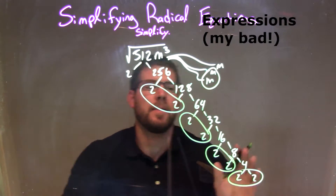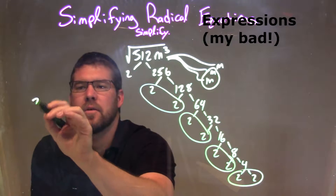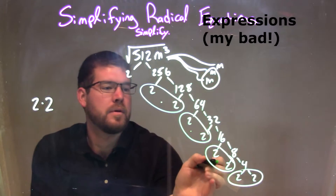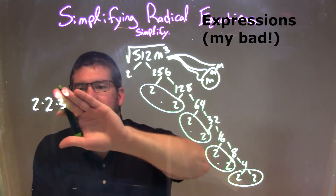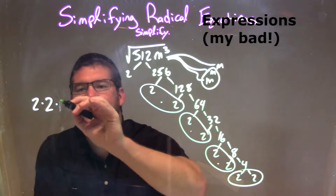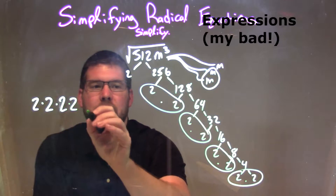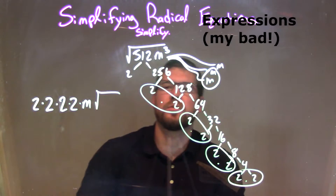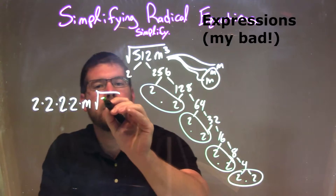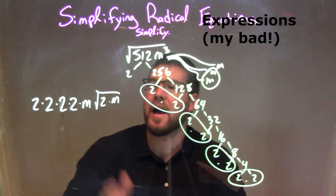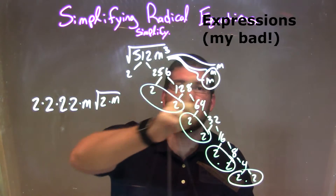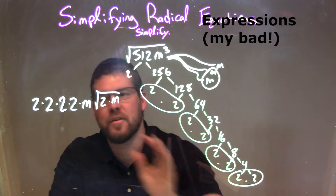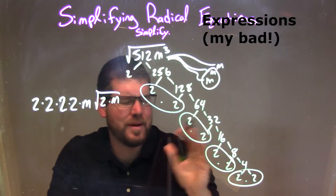So now I've circled my pairs. I'm going to put them on the outside. Every pair represents one number on the outside. So we have 2 on the outside for the first pair, times the second 2, times the third 2, times the last 2. Then we have one pair of m that we circled, so we have 1 m on the outside. On the inside, we're left with just the lone singles — 2 and m — 2 times m. What's left on the inside were the singles that were not paired up, and the pairs combined go on the outside, because each pair represents one number on the outside.